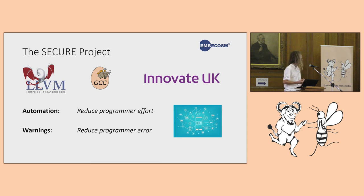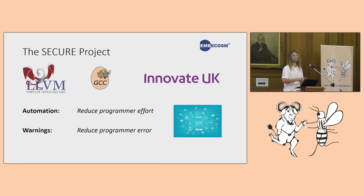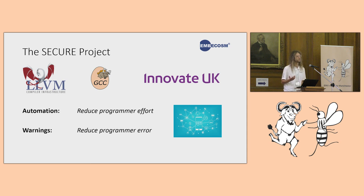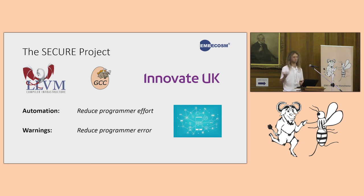There are two areas we're looking at: automation and warnings. Automation means doing things for the programmer that they might otherwise have to do manually or find difficult without help from the compiler. Warnings refers to augmenting existing compiler warnings with some additional security-specific warnings. The main focus is embedded systems and IoT, since many customers work in that space, though we're not limited to those targets.